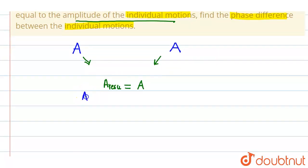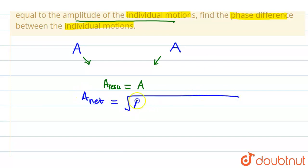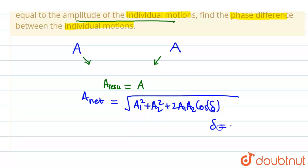We know that the net amplitude is given by: A_net = √(A1² + A2² + 2·A1·A2·cosδ), where δ is the phase difference. We have to find the value of δ.